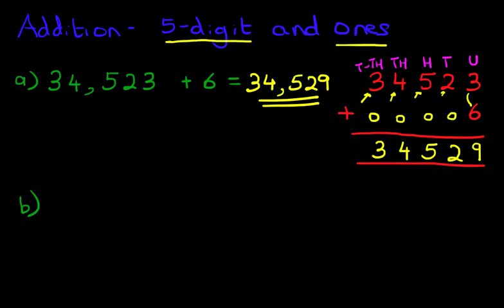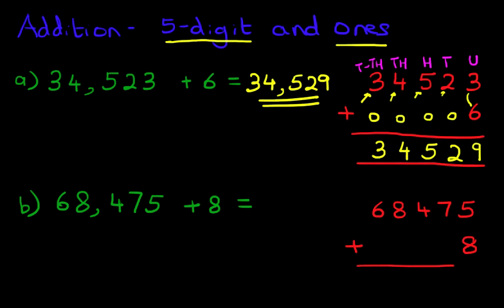We'll do one with carrying this time. Sixty eight thousand, four hundred and seventy five, plus eight. Now again, it's not very difficult. The vertical format. Let's rewrite it. We've got sixty eight thousand, four hundred and seventy five. Plus the eight goes on the right hand side. And we've got the equal sign here.